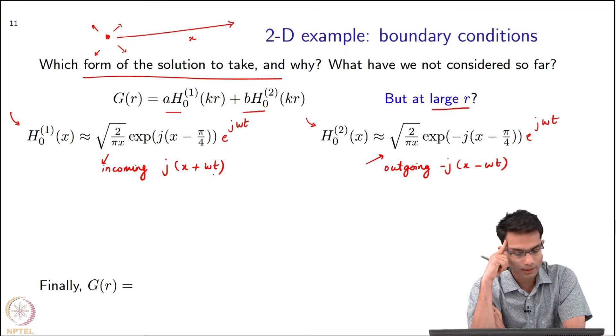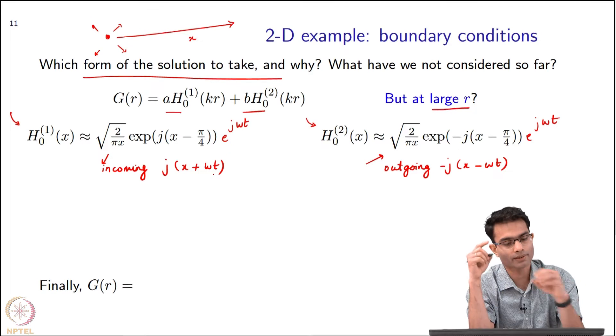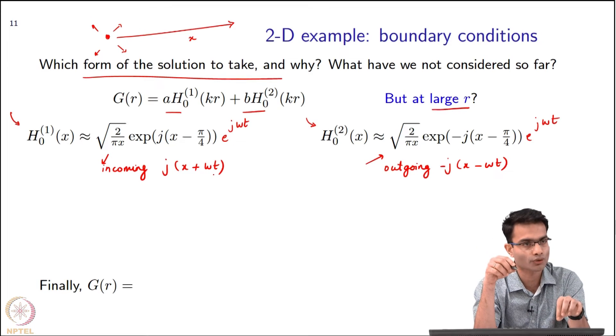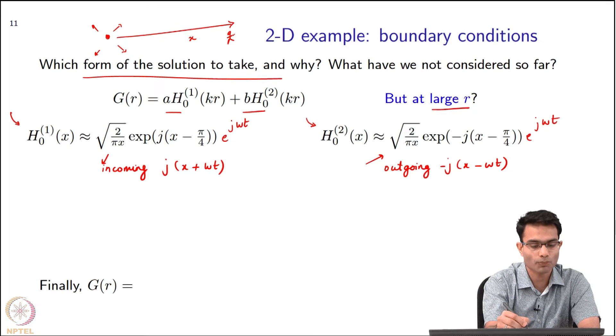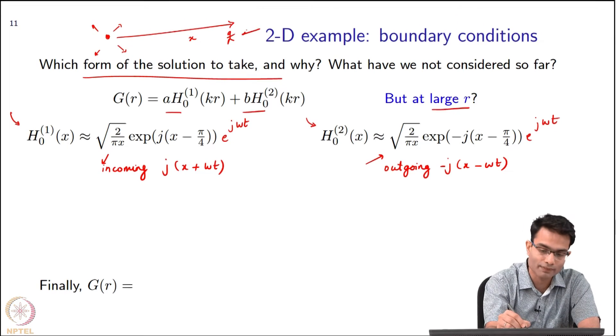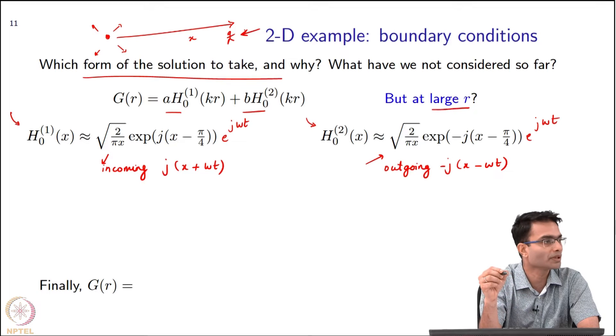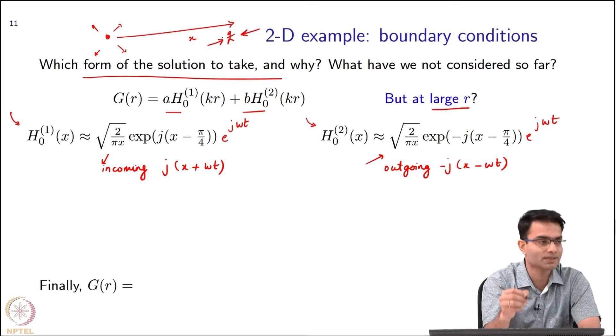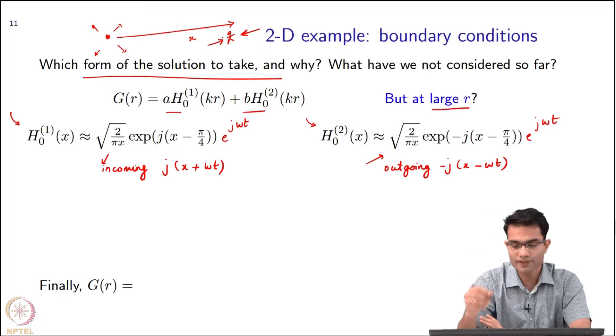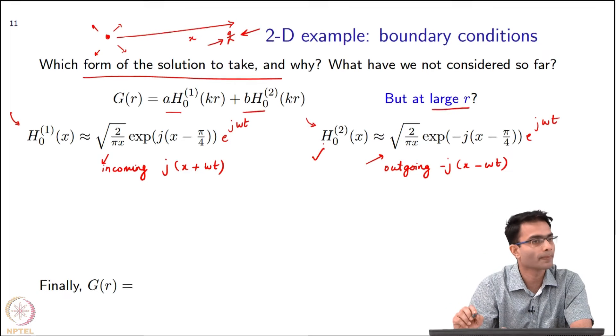For that reason, because my impulse is at the origin, if I am going to a large x over here, this observer cannot possibly observe an incoming wave like this. This fellow can only find an observer wave that is outgoing from the origin, which is matched only by this guy.